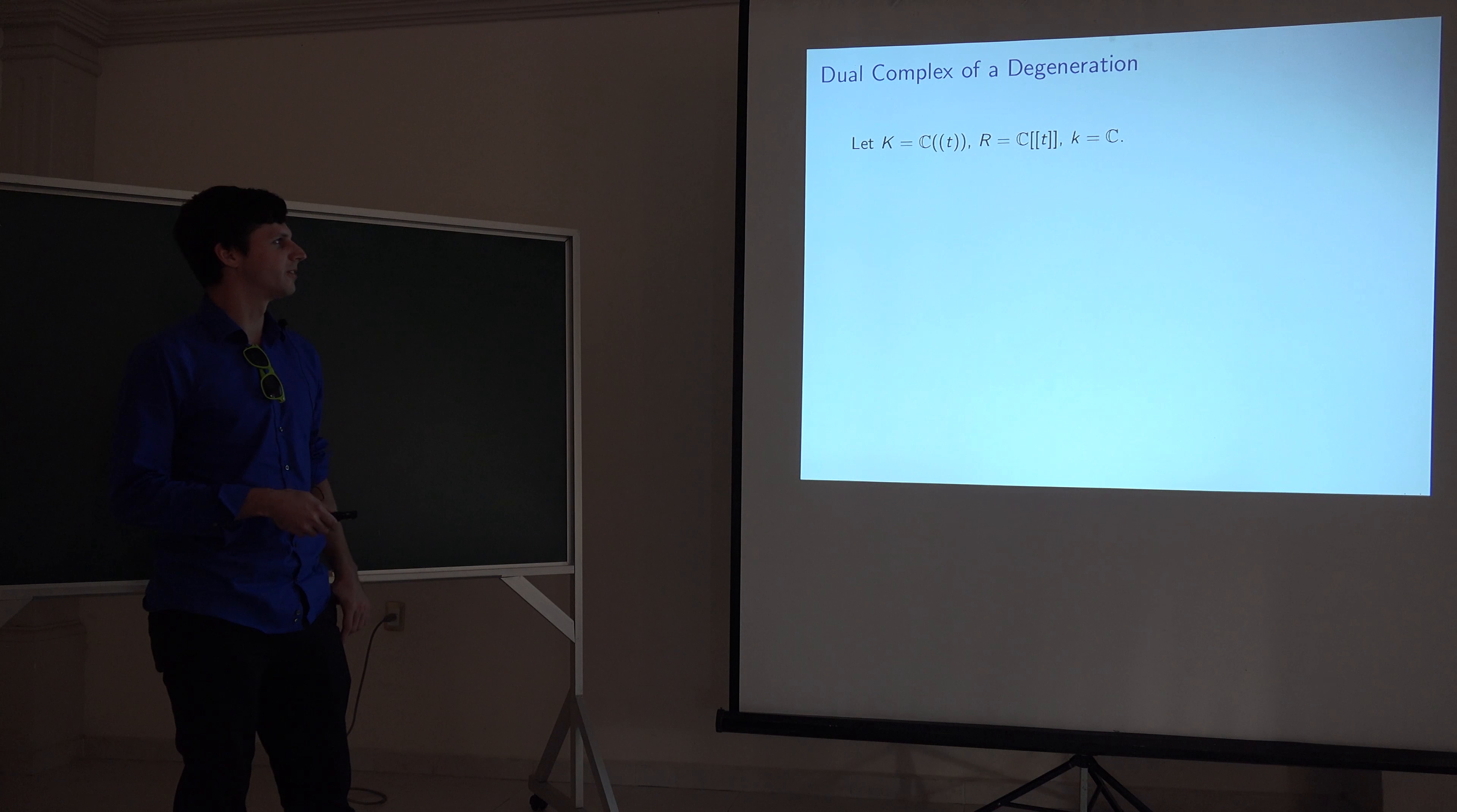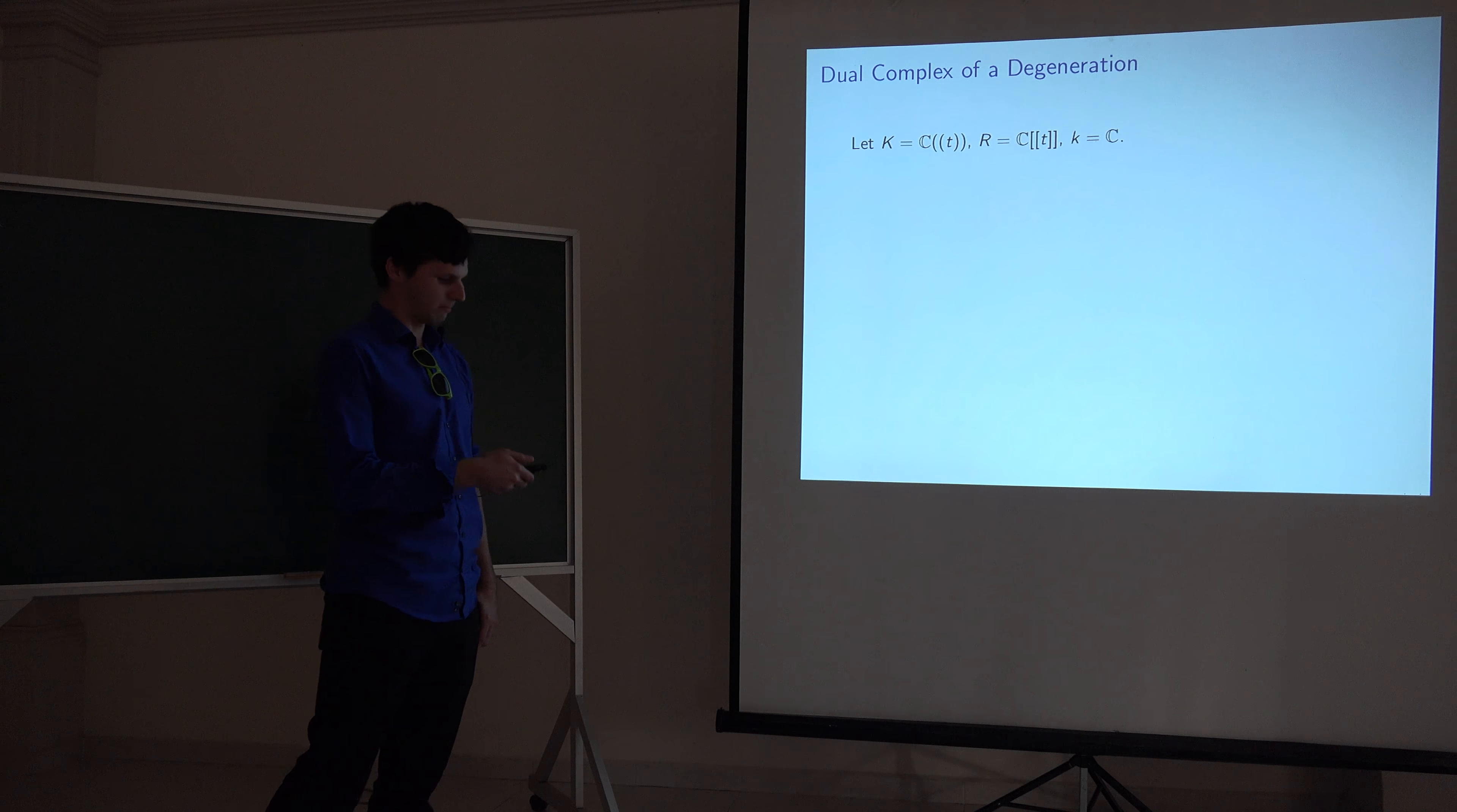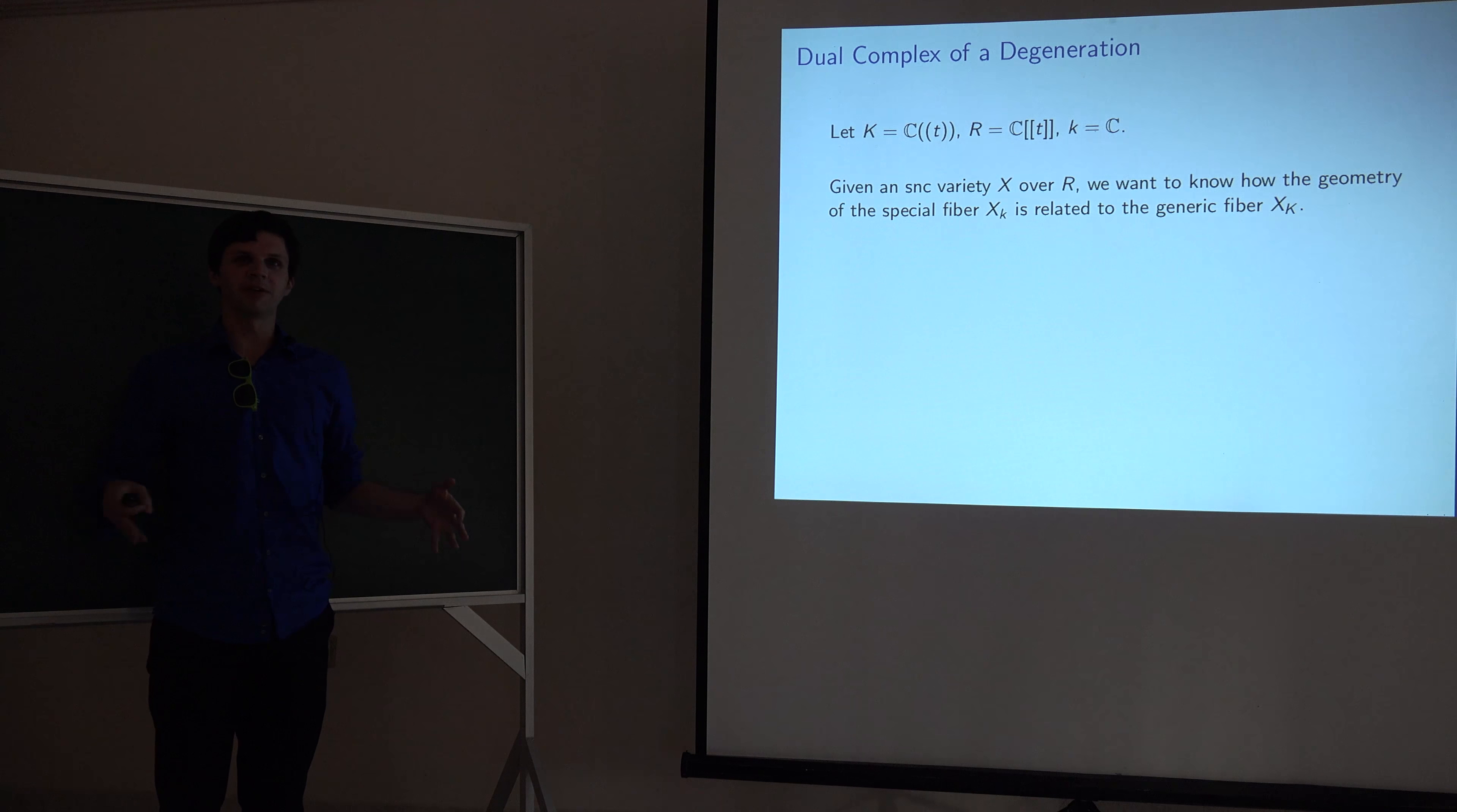R is the regular formal power series over C, and then fault K would be the residue field C. So the idea is we want to think about we have some variety over R. This is how we're going to represent our degeneration.